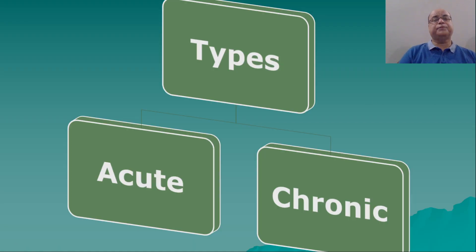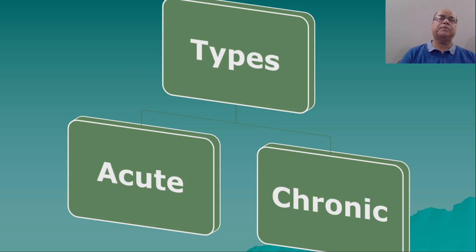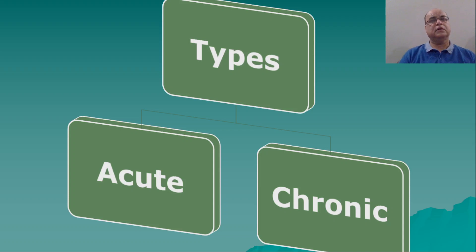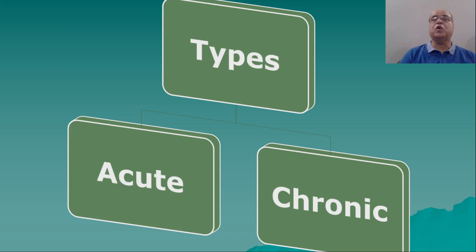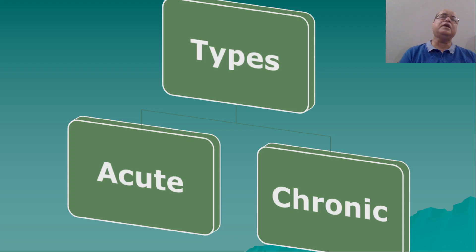Clinically, there are two types of diffuse otitis externa: acute and chronic. Any disease can be classified on the basis of duration of symptoms. Pathologists describe it on histopathological findings, as there are different cell infiltrations in acute versus chronic cases. Any disease can be acute, subacute, chronic, acute on chronic, or recurrent.